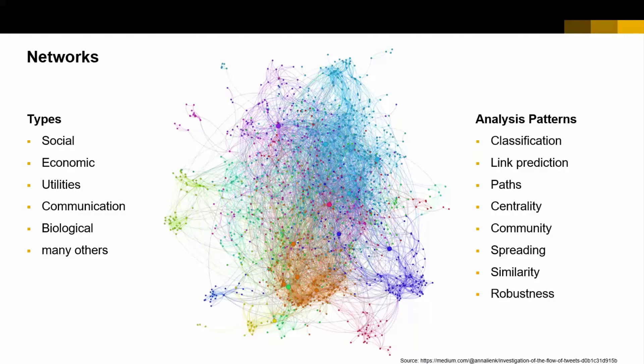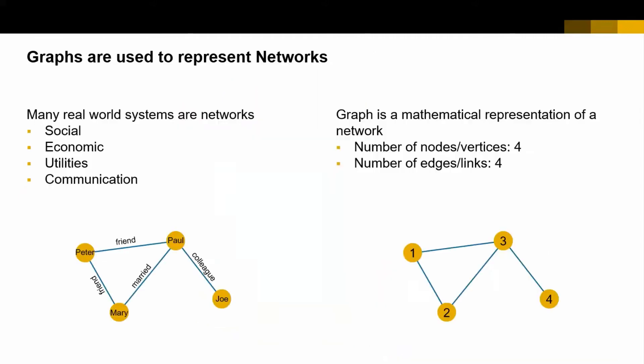For all of these types of networks, there are some classical patterns of analysis. For example, understanding paths — how you get from A to B — or understanding the importance or the centrality of certain nodes in such a network. Many real world systems are networks, and you can think of vertices and edges which make up your network. So for example, there is Peter and there is Paul, which are two persons — two vertices — connected by an edge of type friendship or something like that.